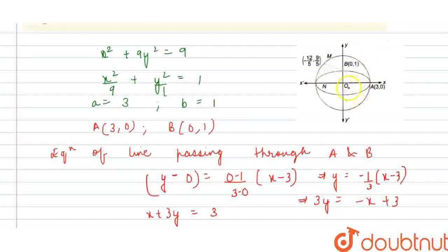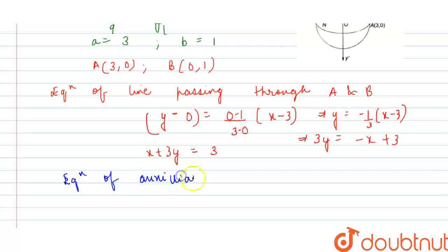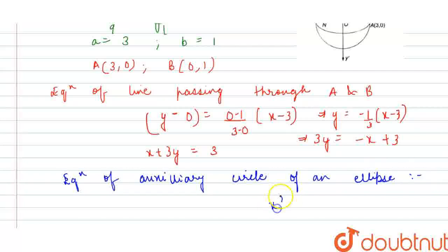Now the equation of the auxiliary circle of the ellipse: since a = 3, the radius is 3 and the centre is (0, 0), so the equation of the auxiliary circle is x² + y² = 9.